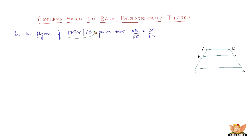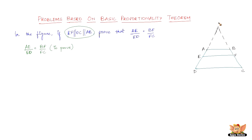What's given is that EF is parallel to DC, which is parallel to AB. We need to prove that AE by ED equals BF by FC. To prove this, we definitely have to do a construction — that is, produce DA and CB such that they meet at a point P.